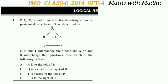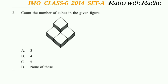Question 1: P, Q, R, S and T are five friends sitting around a pentagonal park facing out, as shown. If P and T interchange their positions, and Q and R interchange their positions, which of the following is true? After interchanging, option A — R is to the left of P — is incorrect; R is to the right of P. Option B — Q is second to the right of R — is incorrect; Q is third to the right of R. Option C — T is second to the left of P — is correct. Option D — S is to the right of T — is incorrect. The answer is option C.